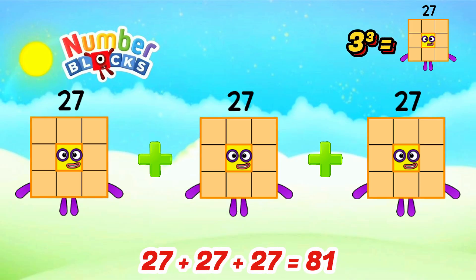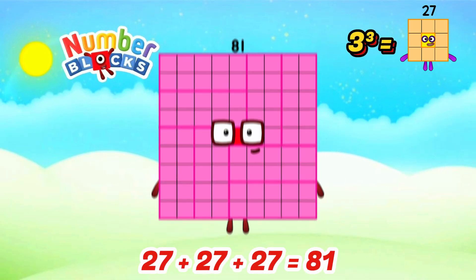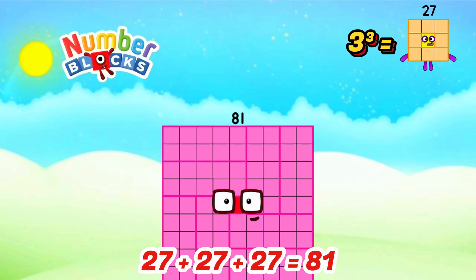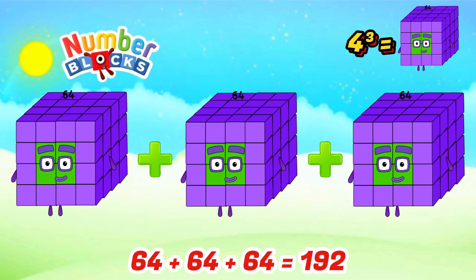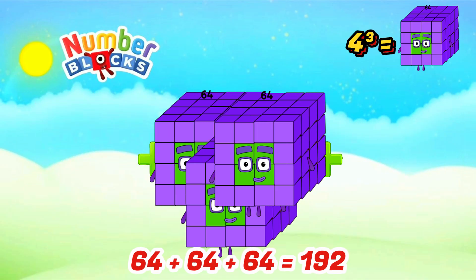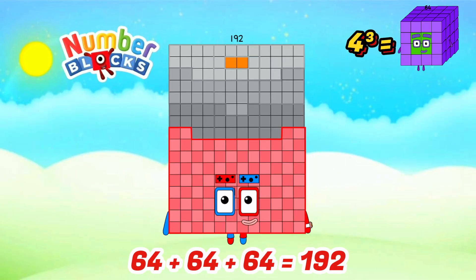Cube of 4 is 64. When we add 64 three times, the answer is 192. Amazing!